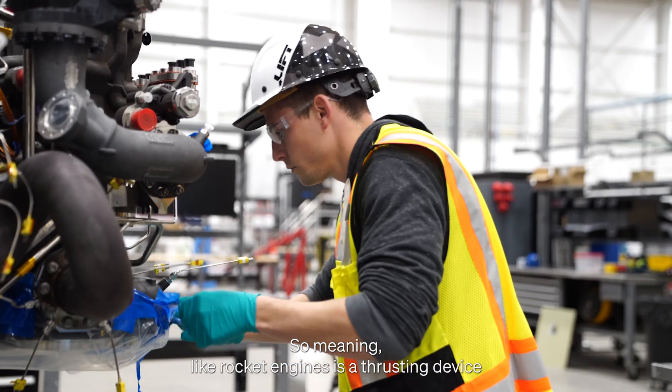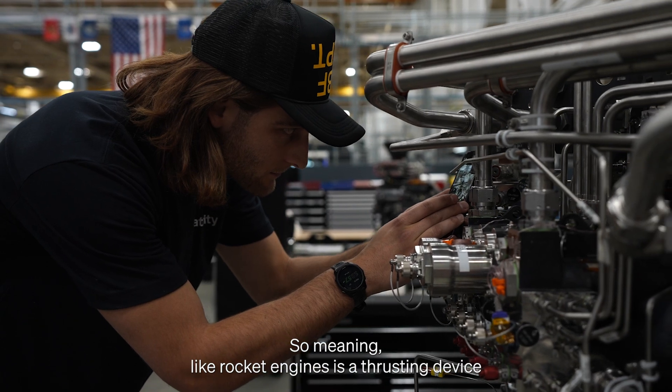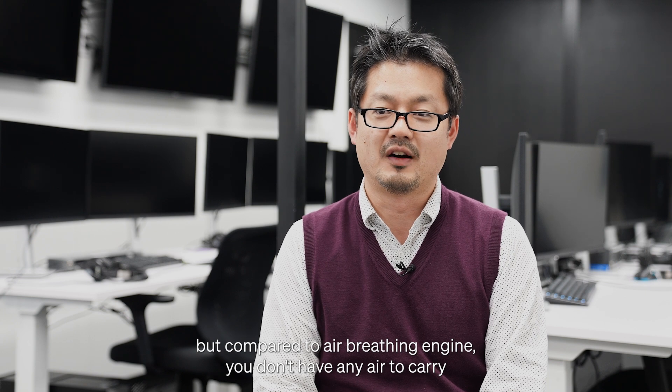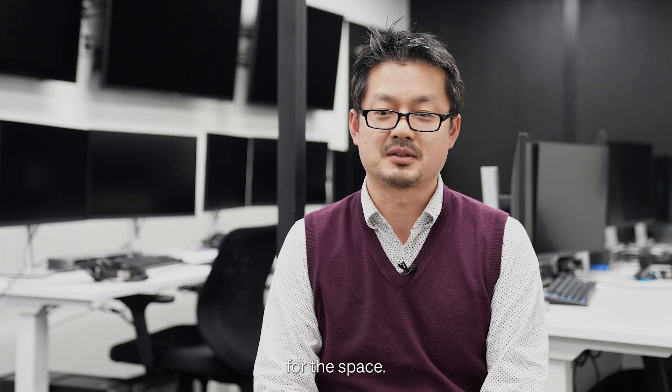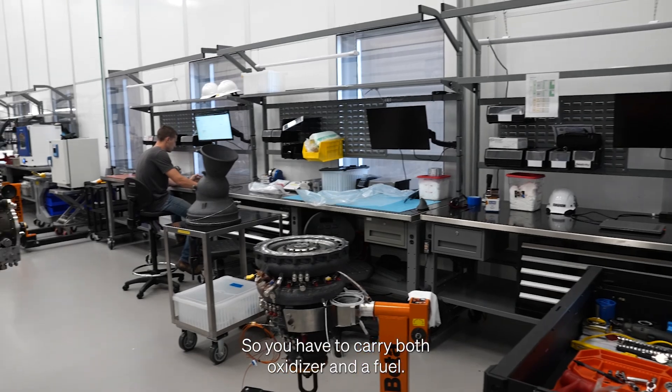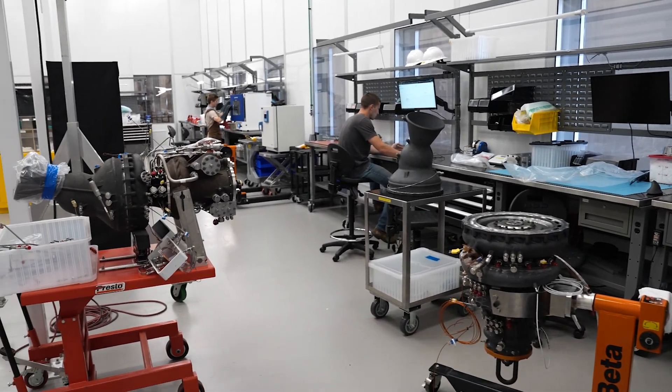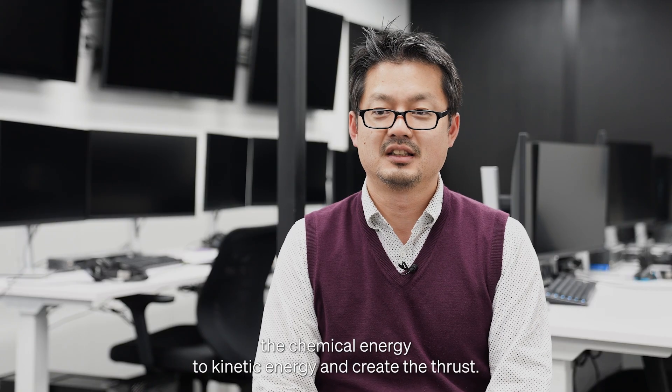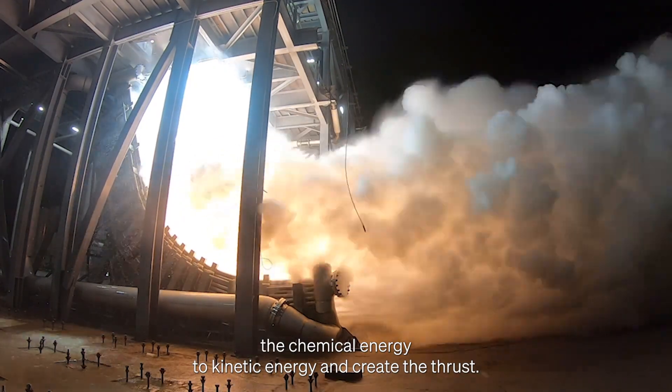A rocket engine is a thrusting device to thrust your vehicle, but compared to air-breathing engines you don't have any air to carry for space. So you have to carry both oxidizer and fuel and combine those things together to convert the chemical energy to kinetic energy and create the thrust.